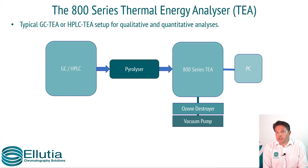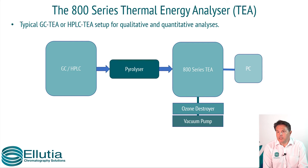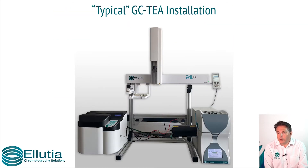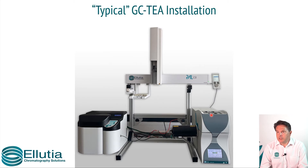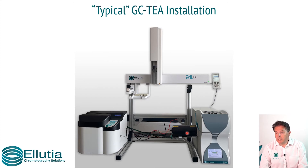This is a generic setup for either a GC or HPLC system. The column effluent enters a pyrolyser where it is heated at temperatures in excess of 500°C. This will break off the nitrosyl group, which is then detected within the TEA. This is a photograph of a typical GC-TEA system. We have the Aleutia PAL, which performs the injection into any GC. The pyrolyser interfaces into a GC through the transfer line port, so this can be interfaced on almost any commercially available GC. Within here it is heated, and then the nitrosyl group enters the TEA.